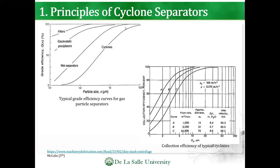However, as the particles become larger, the efficiency becomes high. This is the collection efficiency of typical cyclones. You can see the typical flow rate for curves A, B, and C — this one becomes a much bigger flow rate — and the approximate diameter of the cyclone in inches, and the inlet velocities.